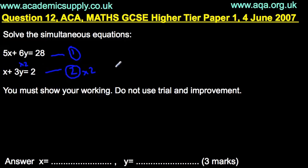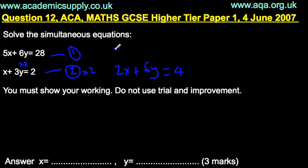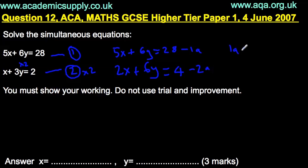So let's times equation 2 by 2. We get 2x plus 6y equals 4, because 3y times 2 is 6y and 2 times 2 is 4. We'll call the original equation 1 as 1a, and the new multiplied equation as 2a. Now we can see both equations have 6y.